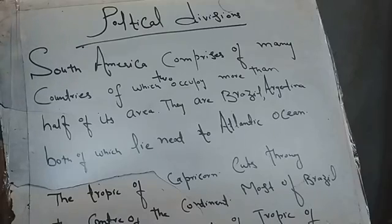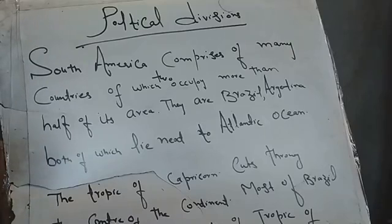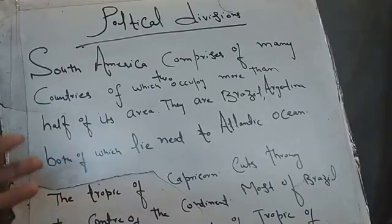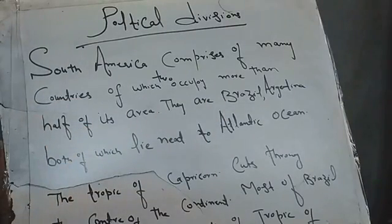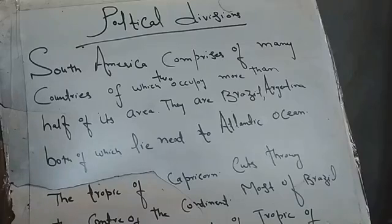The rest of the countries are Bolivia, Colombia, Guyana, Paraguay, Peru, and Venezuela. These other countries together occupy half the area, while the two countries Brazil and Argentina occupy the other half. Both of these two big countries lie next to the Atlantic Ocean — they are completely adjacent to the Atlantic Ocean.